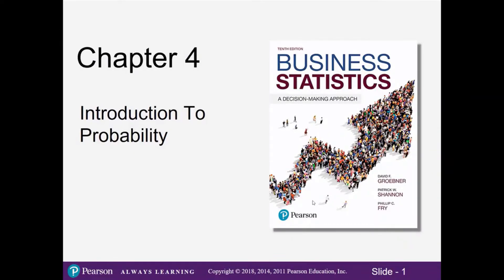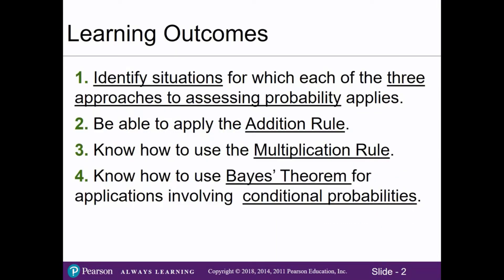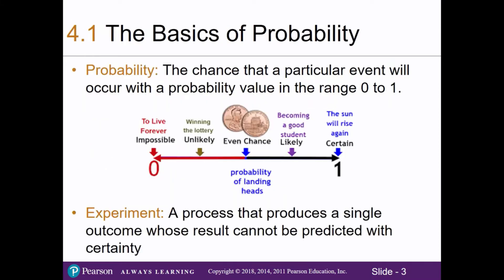Chapter 4: Introduction to Probability. In this video we'll go over some of the key concepts regarding probability as well as discuss the three approaches to assessing probability. Finding the probability of something is to find the chance that a particular event will occur, with a probability value in the range of 0 to 1.